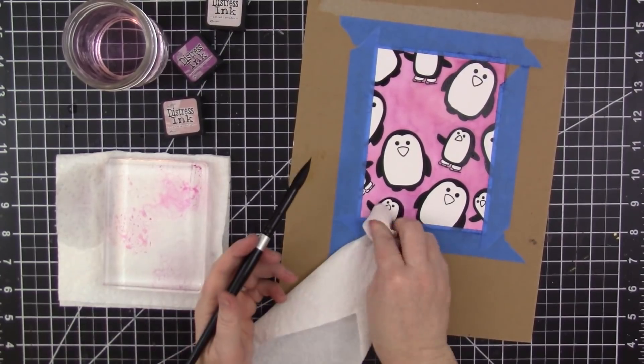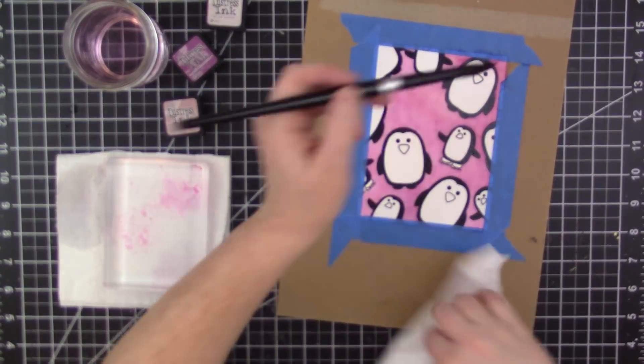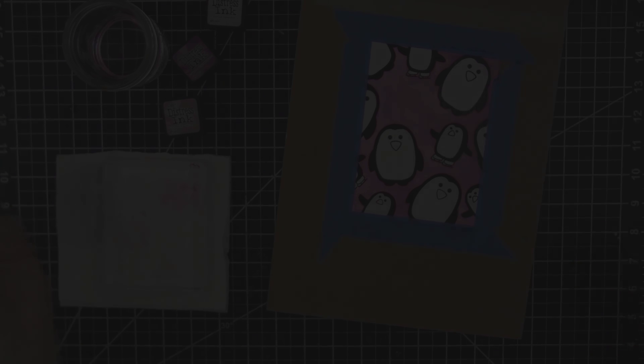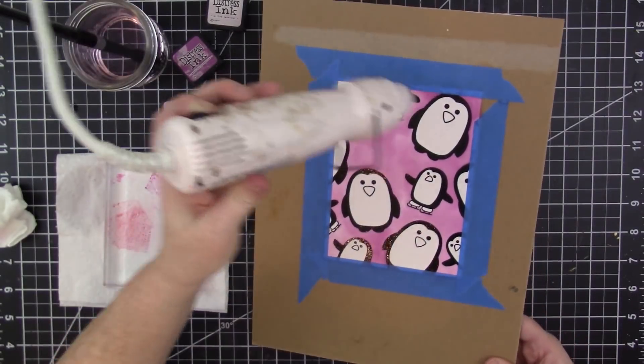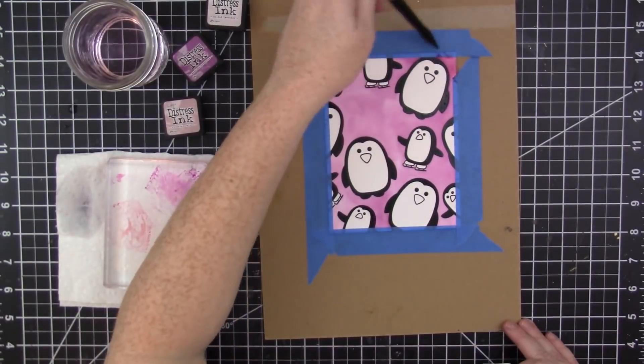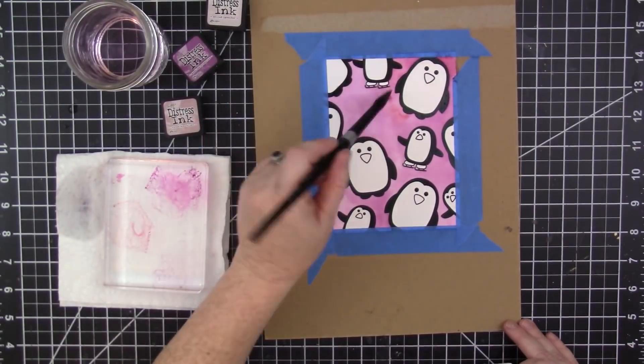So I go in and apply my color, but if I get some color in a place that I don't want it to be, then that's totally fine because I can lift it up by going over it with some clean clear water. And I just flood the area a little bit and then dab it up with a clean paper towel.